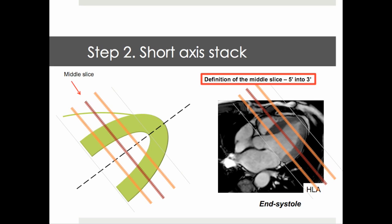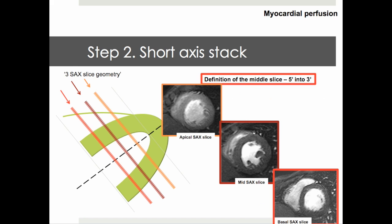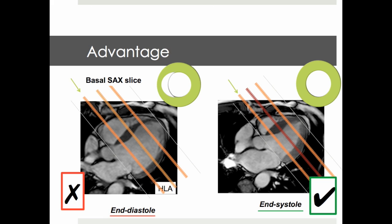Our next step is to remove the two outer slices — the first and the fifth — leaving us with three slices in the middle, providing the definition of the middle slice as well as the basis of the three short axis slice geometry: apical, mid, and basal. The important advantage of planning the three-slice geometry in end systole, as opposed to end diastole, is to account for the movement of the basal septum towards the apex that happens during systole, reducing the chance of cutting into the LVOT in the basal slice, making it non-diagnostic for these important segments.